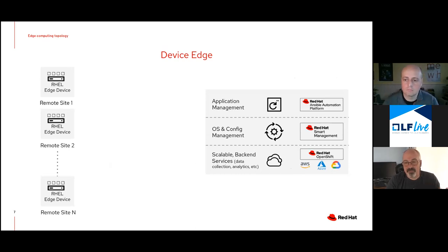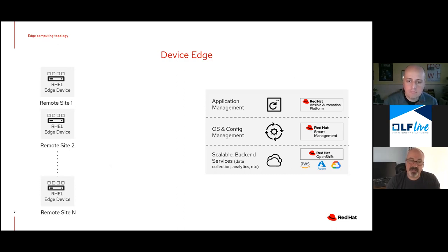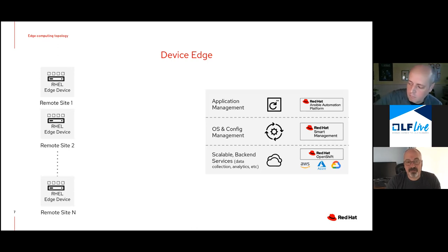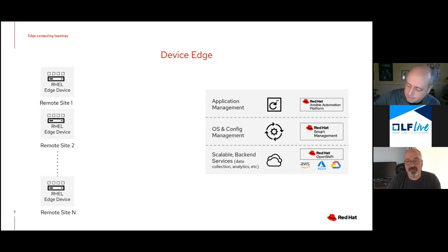OpenShift is Red Hat's Kubernetes — a fully certified Kubernetes platform that's all open source. We're running Ansible on top of Kubernetes, and also running the ELK stack on Kubernetes to collect telemetry information from Prometheus endpoints on those edge devices. We're also considering Smart Management, which is Satellite, to manage the OS and configuration — and leveraging Ansible in two different approaches to manage the actual devices.